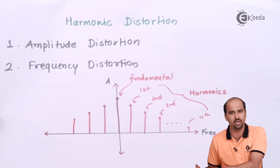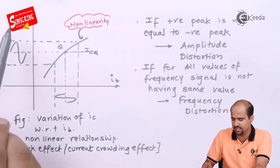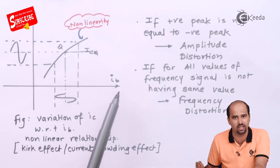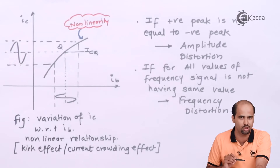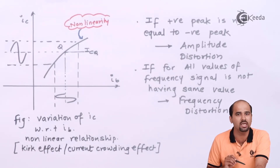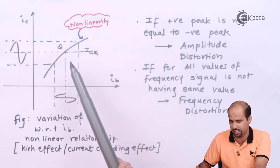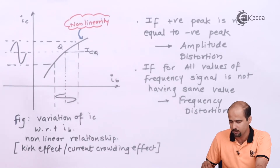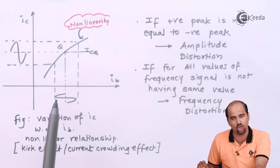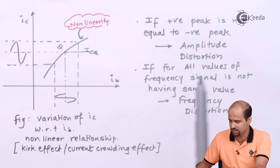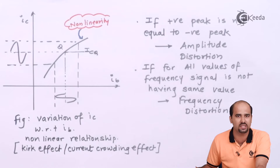First of all, we will understand mathematically how the distortion occurs. Whenever I am talking about the relation between IC and IB — IC is the collector current and IB is the base current — generally in your voltage amplifier we form a linear relationship, but in a power amplifier we have to consider the non-linear relationship. This non-linearity shows that for the same change in IC, there is a different change in IB. This is what I was describing about amplitude distortion and frequency distortion.